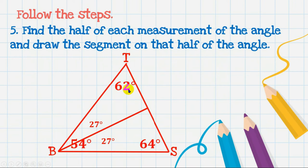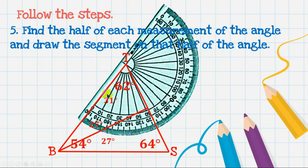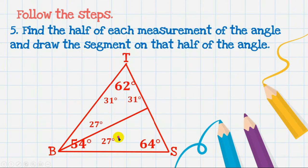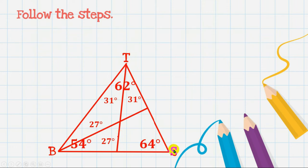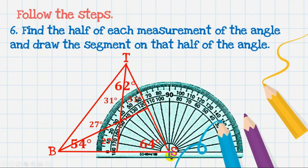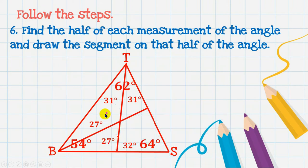Proceed to angle T. Half of 62 is 31. Use the protractor again, find 31 degrees, and mark it. Then draw the straight line segment or ray through that point. For angle S, half of 64 is 32. Place the protractor correctly on the angle, find 32 degrees, mark it, remove the protractor, then use the ruler to draw the straight line segment that will intersect that point.